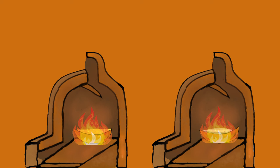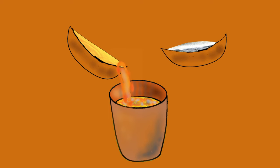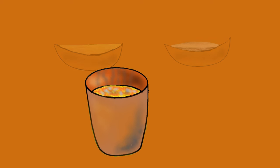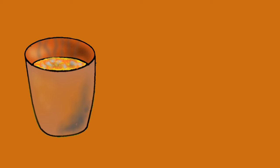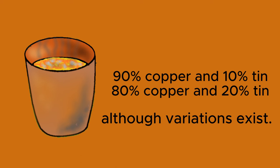Third, alloying the metals: once both metals are molten, they are combined in the desired proportions to create the bronze alloy. The exact ratio of copper to tin varies depending on the type of bronze needed. Common ratios range from about 90% copper and 10% tin to 80% copper and 20% tin, although variations exist.